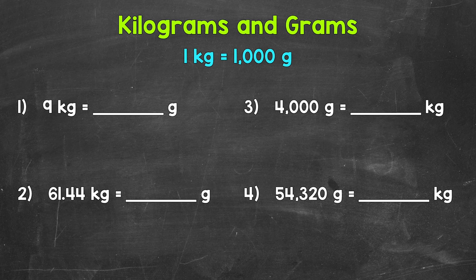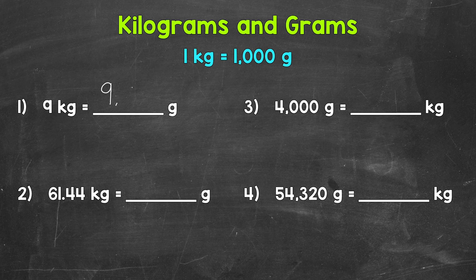Let's jump into number one, where we have 9 kilograms equals how many grams? Each of those kilograms is one thousand grams, so we have one thousand grams nine times — in other words, nine times one thousand. Nine times one thousand equals nine thousand. So nine kilograms equals nine thousand grams. When we go from kilograms to grams, we multiply by one thousand.